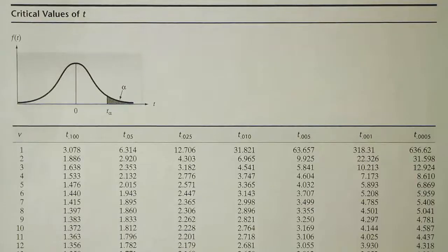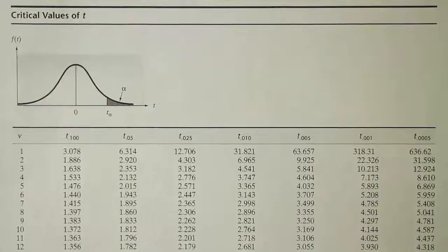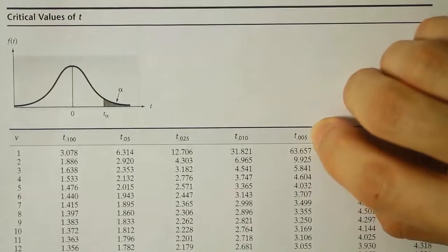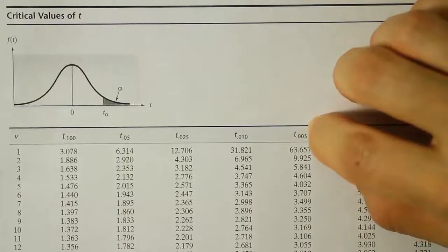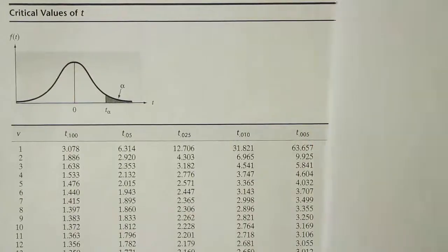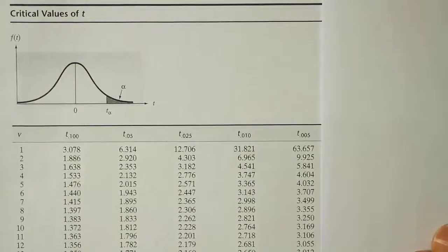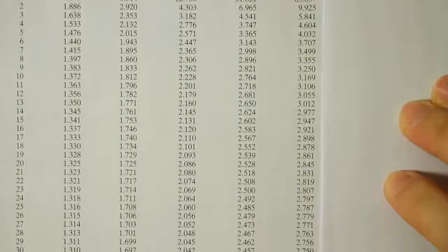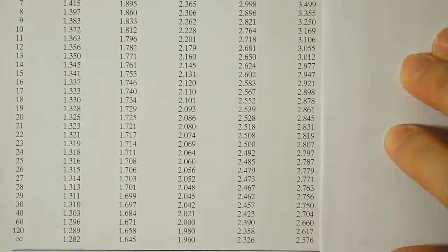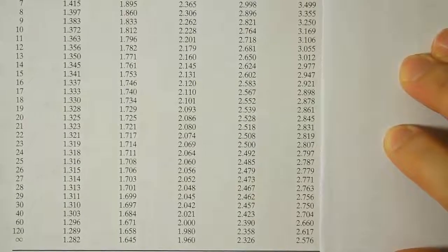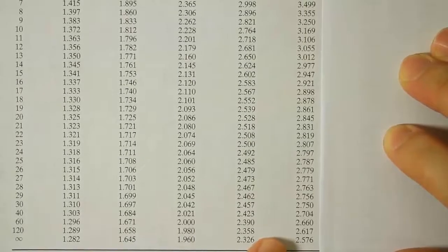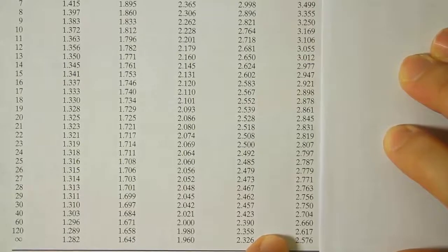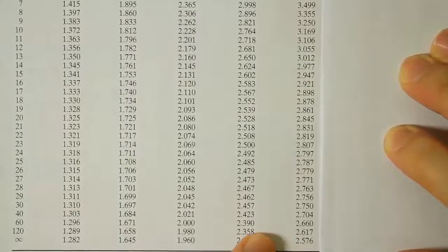Okay, so with this problem, my alpha divided by 2 value is .005. So I'm looking for t.005. That's my alpha divided by 2 value. So I'll isolate that now, isolate that column, and go all the way down until I see the infinity symbol to get my Z-value. So there it is. We find that the answer is 2.576.